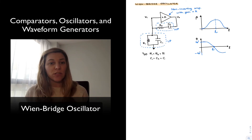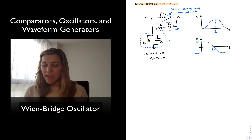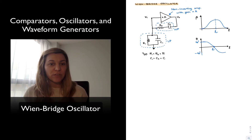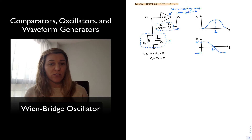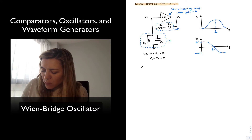The Barkhausen criterion tells us that in order to sustain an oscillation, the loop gain A times beta must be equal to 1, and the phase shift around the loop must be equal to 0 degrees or an integer multiple of 360 degrees. In order to apply the Barkhausen criterion, we need to come up with an expression for the loop gain, so the loop gain GL is going to be equal to A times beta.